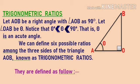Let us understand the trigonometric ratios in a better way. As you can see on the screen, there is a right angle triangle AOB, right angled at O. That means angle O is a right angle, that is 90 degrees. Let us assume that angle OAB is theta, where theta is greater than 0 degrees but less than 90 degrees.